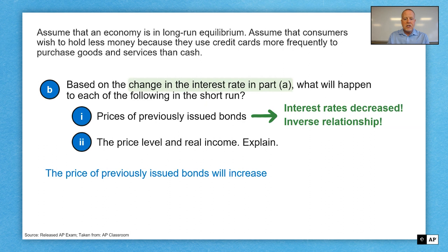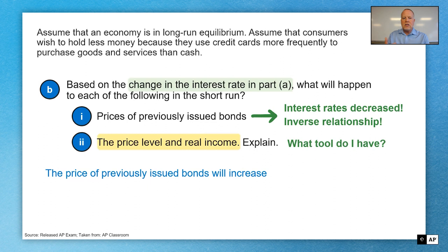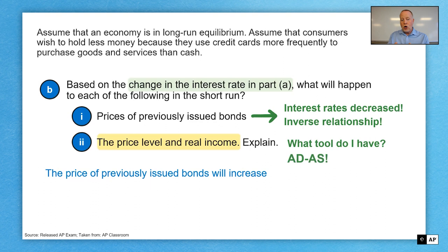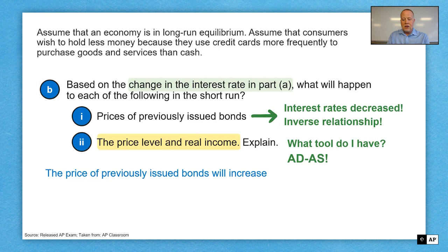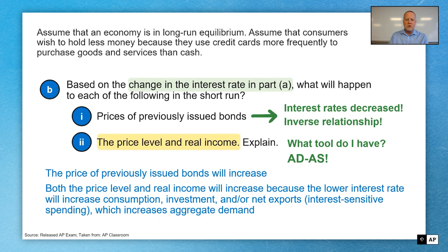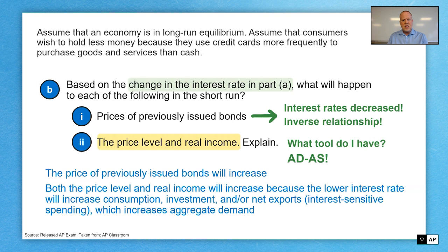B-II: what's going to happen to price level and real income? I've got to give a little explanation here. What connection or graph do I have to connect interest rates to price level and real income? There's really one thing that's going to show you changes in price level and income, and that's the ADAS model. Your correct answer: both price level and real income will increase because the lower interest rate will increase consumption, investment, or net exports — those are your interest-centered spending — and that's going to increase aggregate demand. Visualize that on the ADAS model.